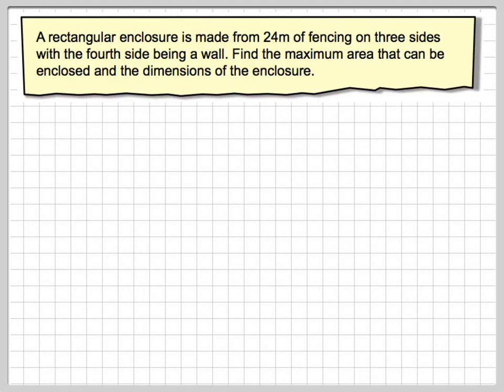So in this problem I'm going to use a little bit of technology to solve it. Let's just read through the problem first. A rectangular enclosure is made from 24 metres of fencing on three sides, with the fourth side being a wall.